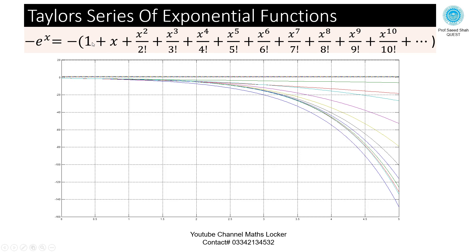If you are taking four terms, the graph is here — this is called the third order. If you are taking eleven terms, then the graph is here. If you are taking the exact function, this is called the true value. When you increase the number of terms, you can see we are going nearer to the exact value.